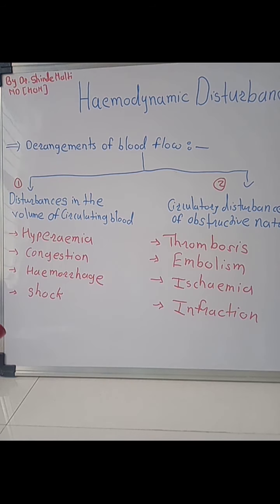The second category, circulatory disturbances of obstructive nature, means there is some obstruction in blood flow. This causes four conditions: thrombosis, embolism, ischemia, and infarction. These are the disturbances that cause hemodynamic disturbances, or derangement of blood flow.